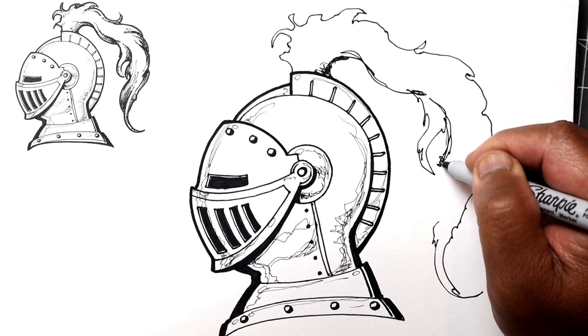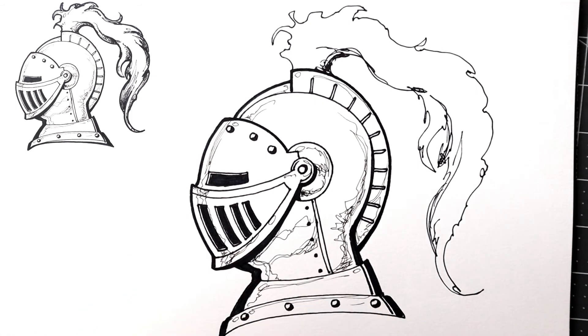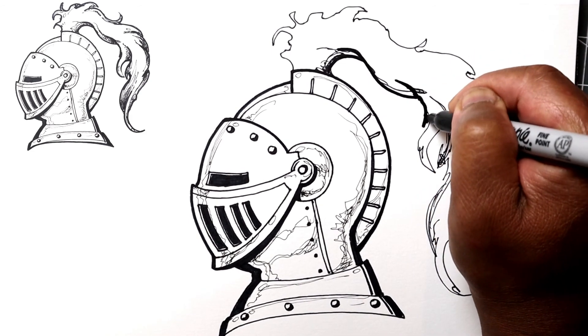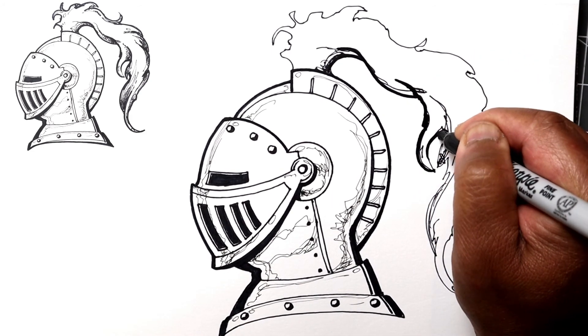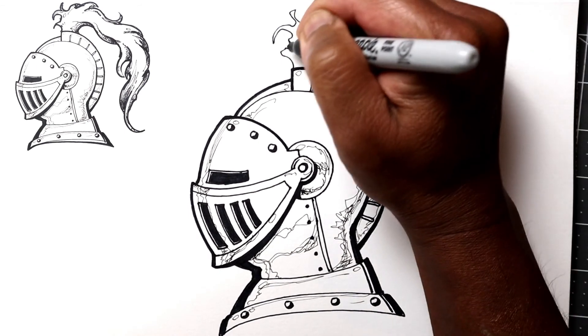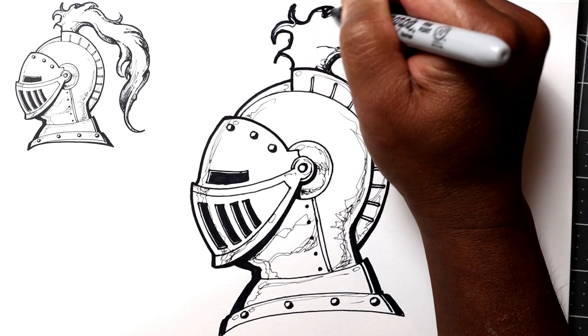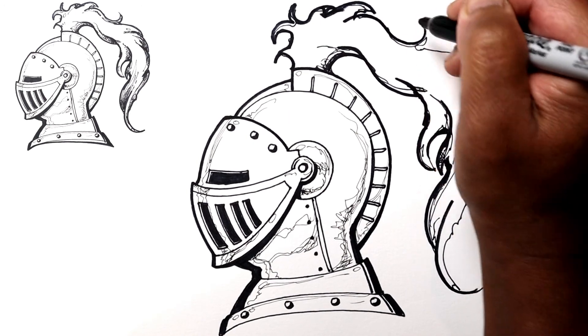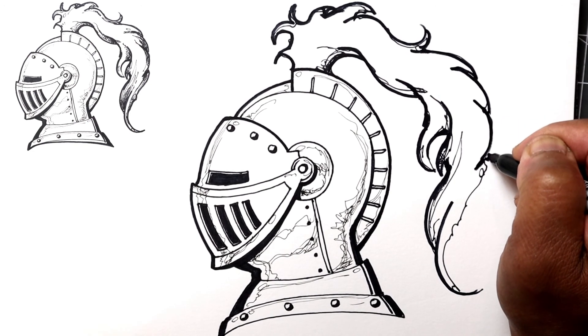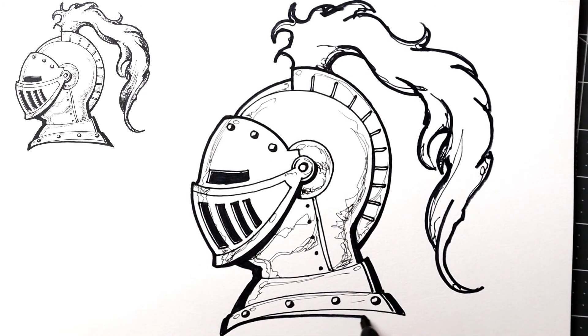Then it starts to narrow to the tip, just like that. I'll go ahead and make this a little thicker, give it a nice bold outline. I'll make the bottom part dark right now.